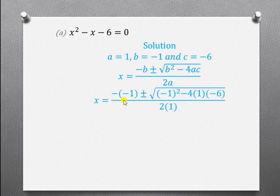So, I have substituted. Where there is B, I've put negative 1. Where there is B again, I've put negative 1. But there is a square. And that is why I've applied the bracket. Where there is A, I've put 1. And where there is C, I've put negative 6. Where there is A here again, I have put 1. So, you realize it is just a matter of substituting.